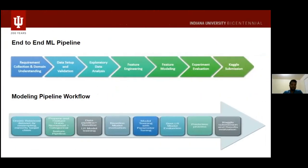We use the end-to-end pipeline to create a baseline model. We downloaded the data from Kaggle, performed EDA, visual EDA, and feature extraction by aggregating primary and secondary datasets. Feature engineering was done by developing new features, and we created a baseline model with highly correlated features.